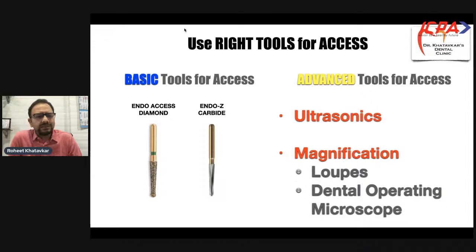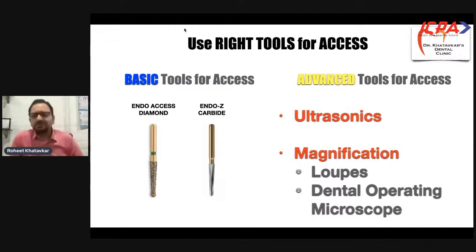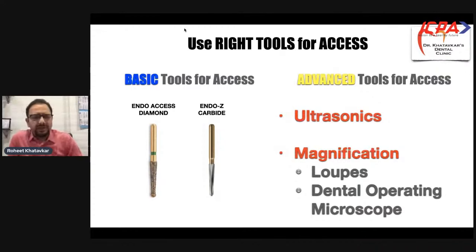As far as basic tools are concerned, we need certain diamonds — an endo-access diamond — and certain carbide burs like a safe-ended carbide bur. Ultrasonics and magnification in the form of loops or a dental operating microscope can be your next step in investing towards doing better access cavity preparation.